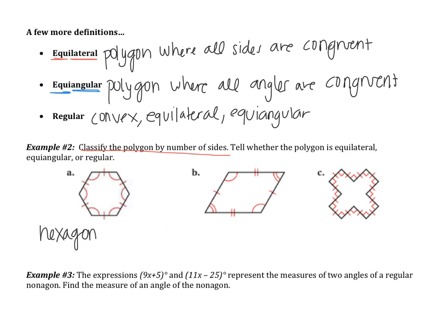And then next, tell whether the polygon is equilateral, equiangular, or regular. Well, it's definitely equilateral. We can tell all the sides are marked congruent. It's definitely equiangular, because the angles are marked congruent. So equilateral and equiangular would make this a regular figure. It's also convex. So this is regular. Remember, regular means that it's convex, equilateral and equiangular. All those have to be true.